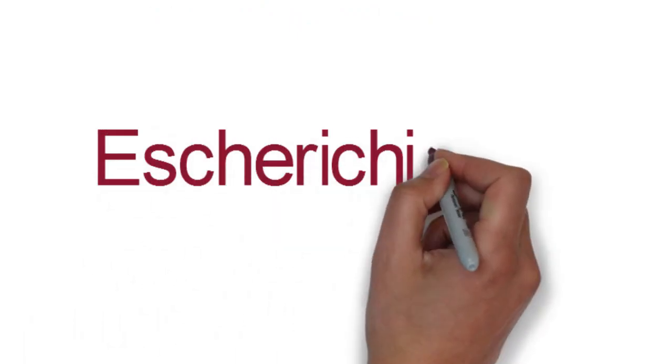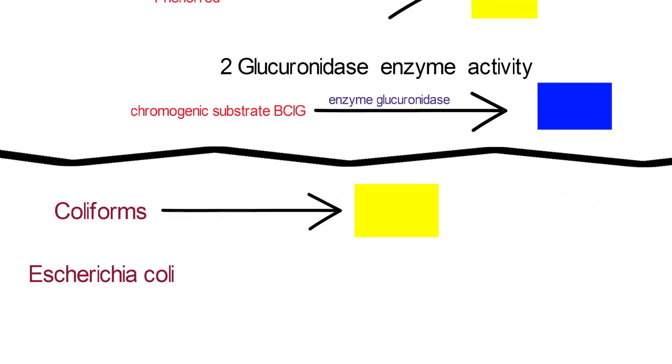Escherichia coli is both lactose positive and possesses glucuronidase, so will appear as green colonies.